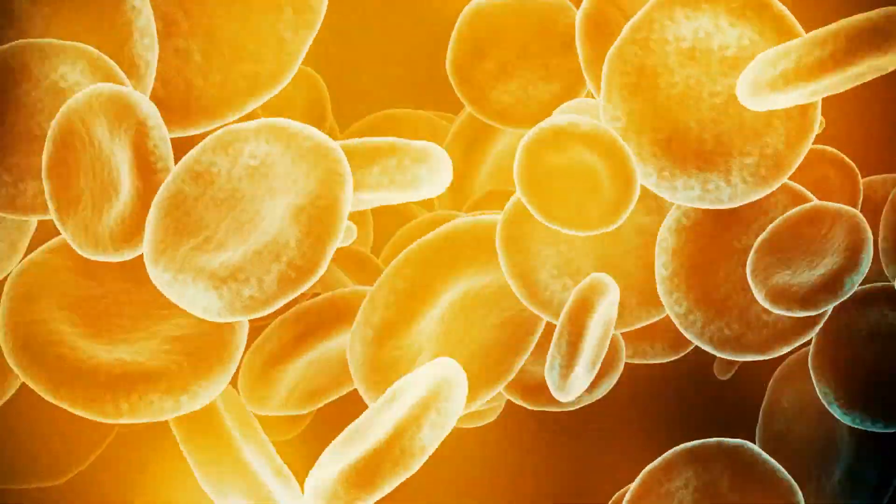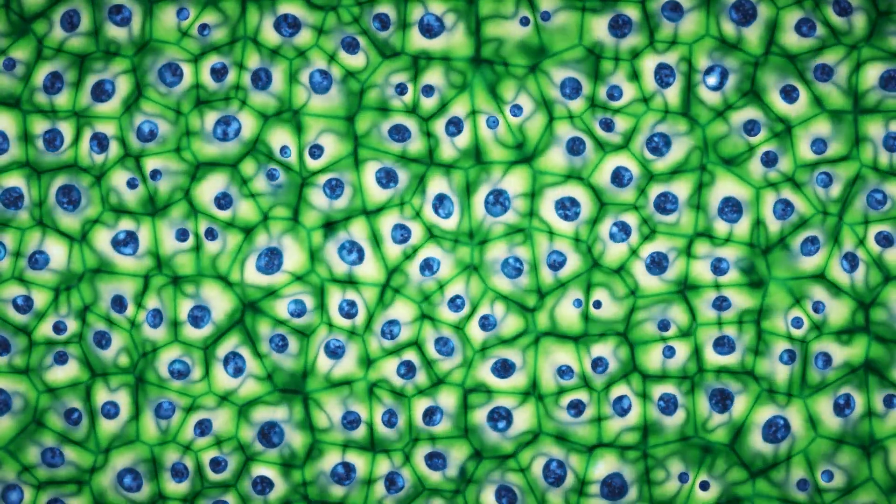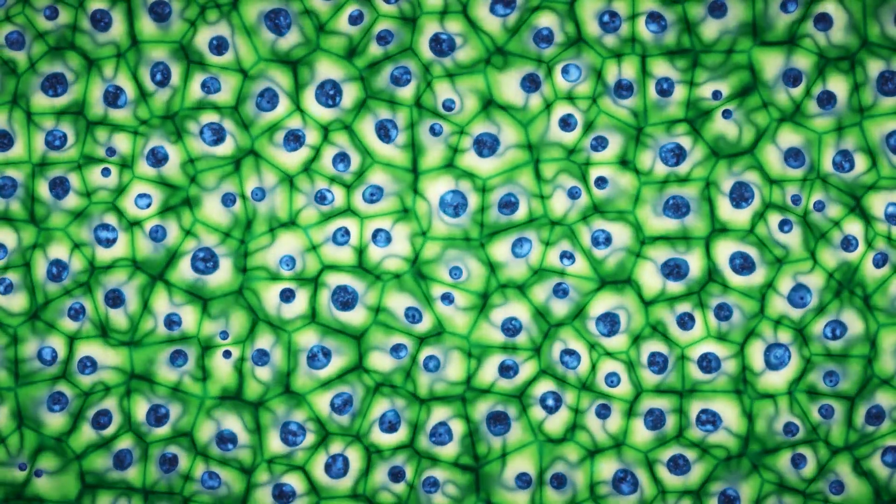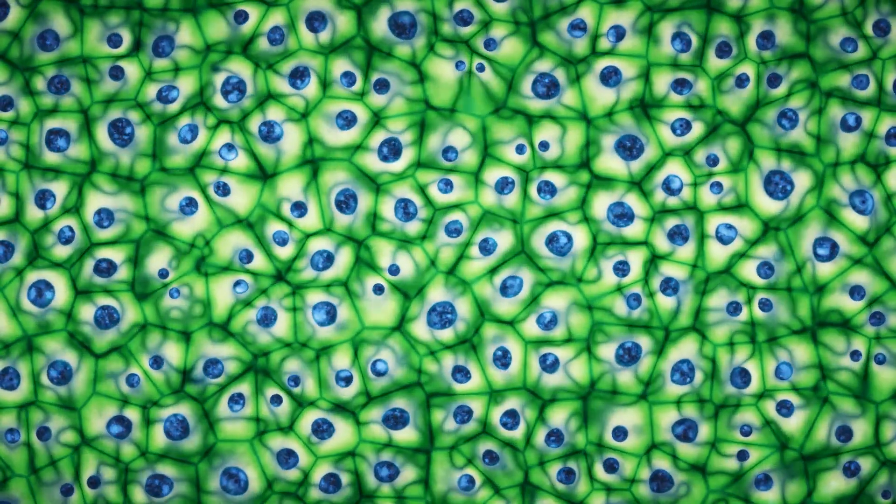First, fat tissue is mostly made of fat cells. It also has pre-adipocytes, which mature into fat cells, and many immune cells like adipose tissue macrophages.